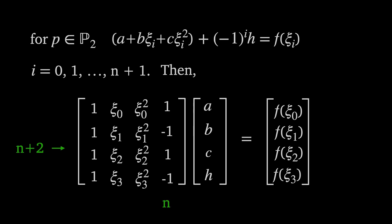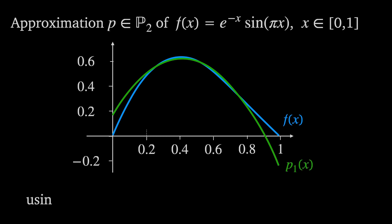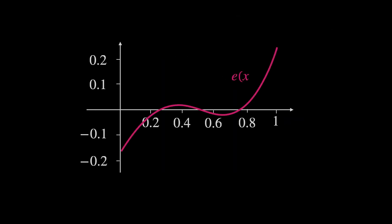This is a linear system of n+2 equations and n+2 unknowns, so we can solve for a, b, c, and h, giving us our polynomial. The only problem is we don't know the ξ values of the alternating set. So we start by guessing the n+2 values — called the reference — then solve the equations to get a polynomial approximation, which I'll call p₁. Note that h is also calculated when we solve for the polynomial, and h can be positive or negative.